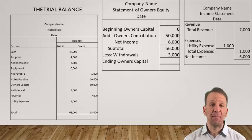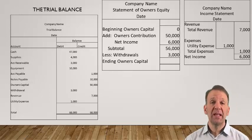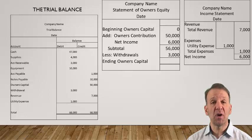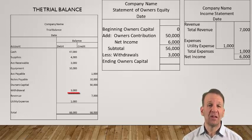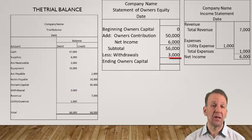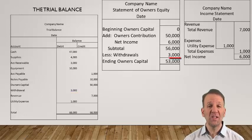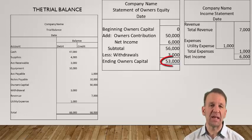The next step in preparing the statement of owner's equity is to subtract out any withdrawals. You can see the withdrawals in the trial balance and we need to include this balance in the statement of owner's equity. Once we subtract our withdrawals, our statement of owner's equity balance is $53,000.